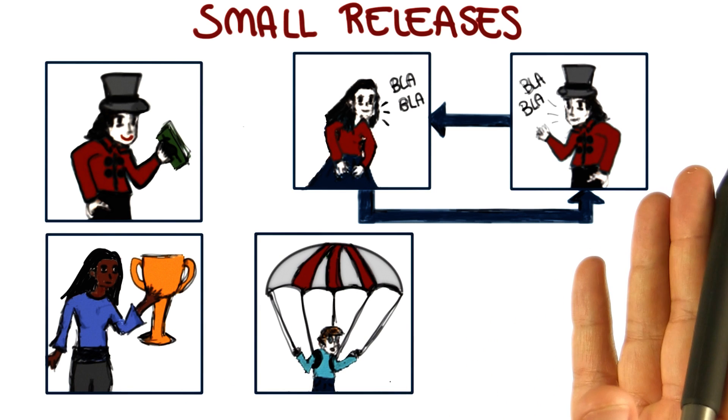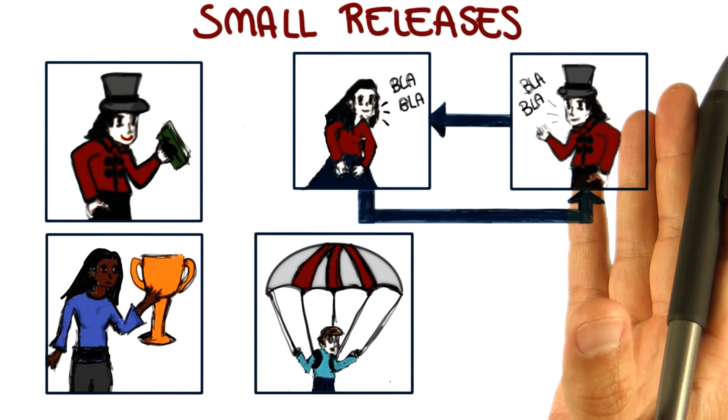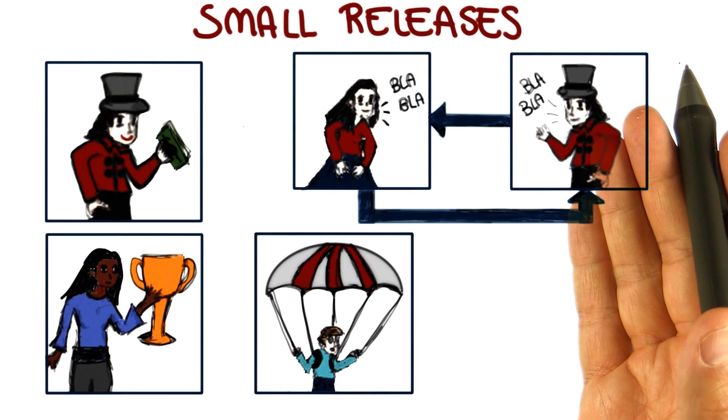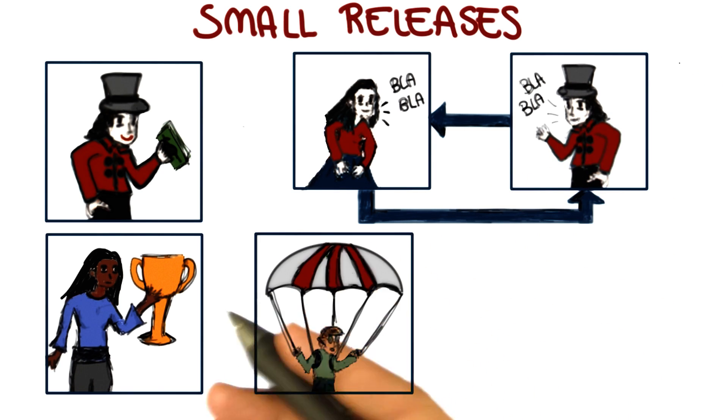And in addition, it also reduces risks. Because again, if we're going down the wrong path, we will know right away. If we are late, we will know right away. So these are just additional advantages of having this quick cycle and small releases.